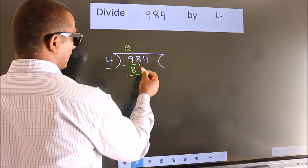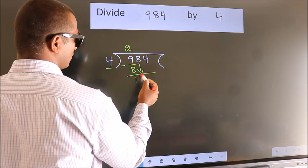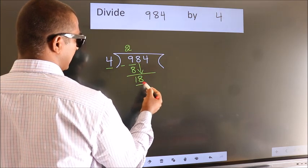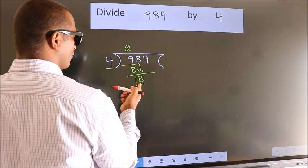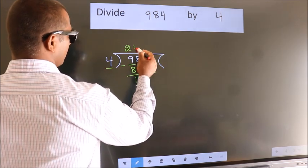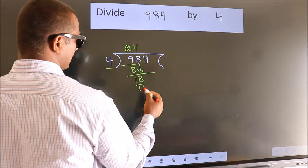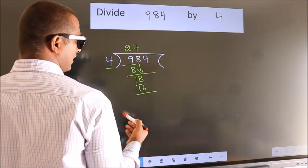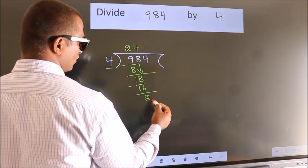After this bring down the beside number. So 8 down. So 18. A number close to 18 in 4 table is 4 fours 16. Now we subtract. We get 2.